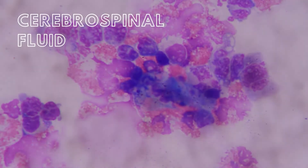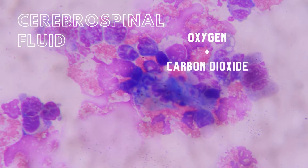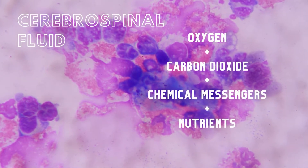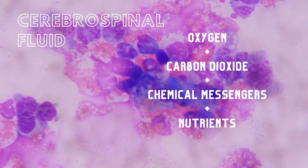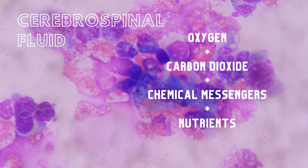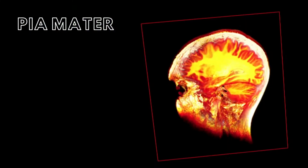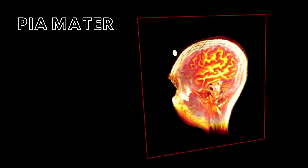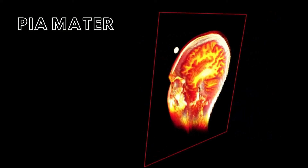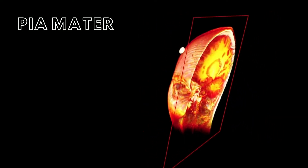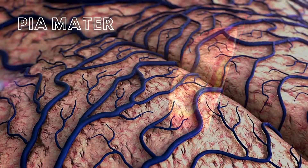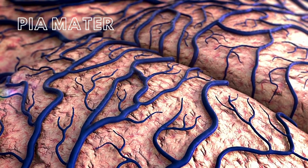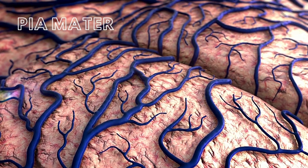CSF is a solution of dissolved oxygen, carbon dioxide, chemical messengers, and nutrients for the central nervous system, as well as a means of transporting waste from the CNS. The pia mater is the deepest meningeal layer and is attached to the surface of the brain and spinal cord. This layer is highly vascular, with blood vessels supplying the spinal cord and brain with blood.